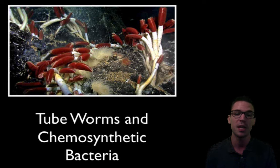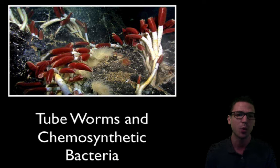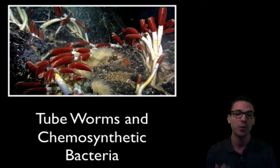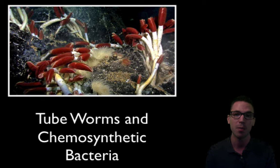A third example is tube worms and chemosynthetic bacteria, a symbiotic relationship found at hydrothermal vents. It's very similar to corals and zooxanthellae. The chemosynthetic bacteria perform chemosynthesis, making food from chemical energy instead of light energy. They live inside the tube worms, getting protection, while the tube worms take in the materials the bacteria need. In return, the tube worms receive the sugars and other organic molecules the bacteria produce. Both benefit from the relationship.